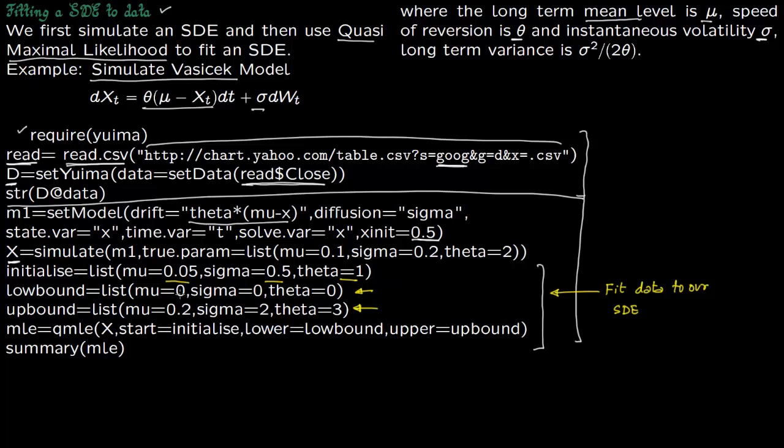So I'm giving lower bound mu as 0, upper bound for mu as 0.2, lower bound for sigma as 0, upper bound for sigma as 2, lower bound of theta as 0, upper bound for theta as 3.